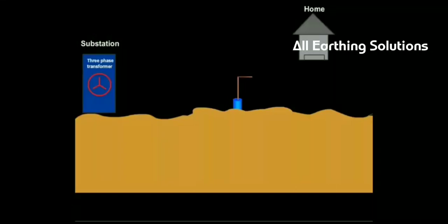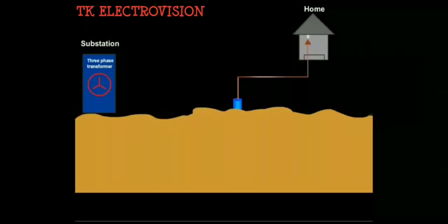The copper rod is connected to the house and is called the earth. Electrical power from substation is supplied to house through a live wire and a neutral wire.